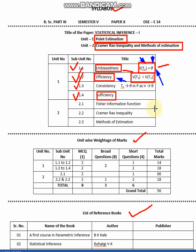Variance represents variation. If there is small variation, we say an estimator is more efficient compared to others. For example, if the variance of T1 is less than the variance of T2, this means the variation of T1 is less than T2, which concludes that T1 is more efficient than T2, since the variation in T2 is more.